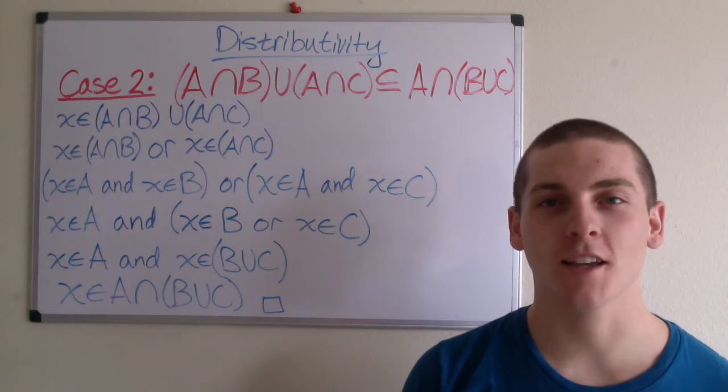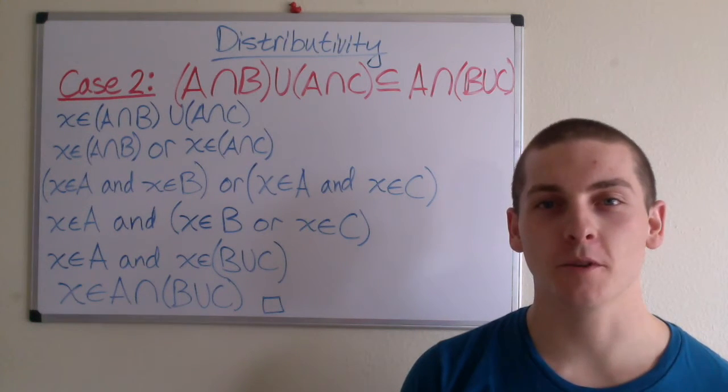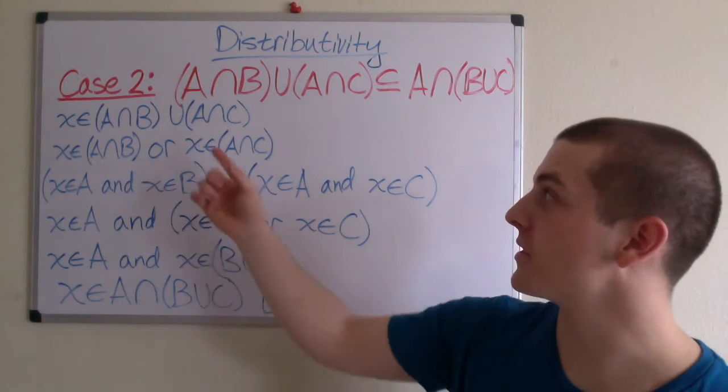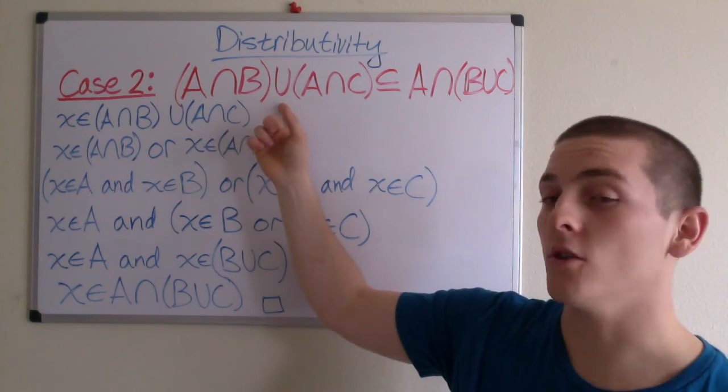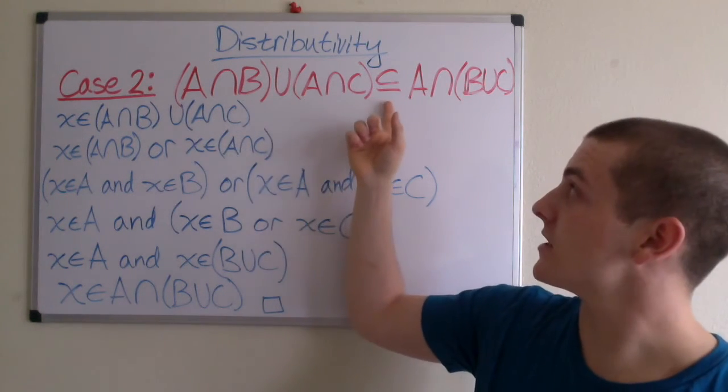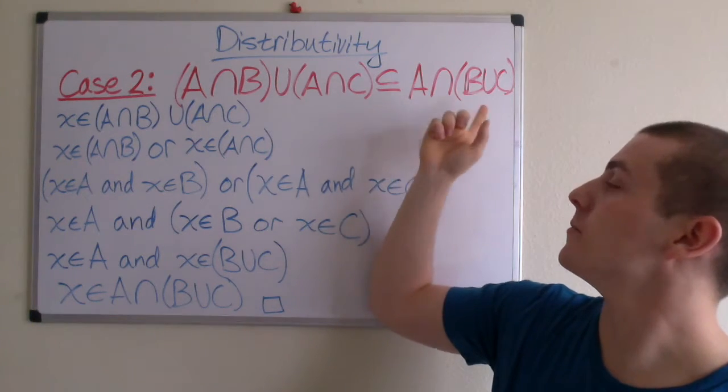In this video, I have the proof of the second case for the distributive law. In this case, we're showing that A intersection B union A intersection C is a subset of A intersection B union C.